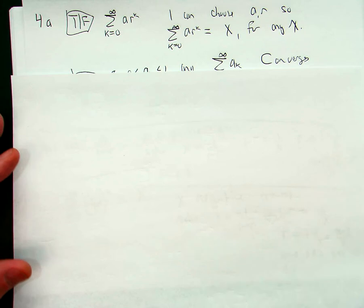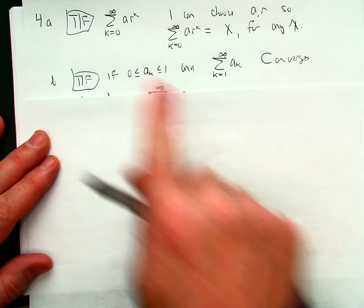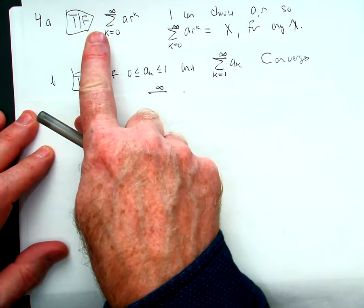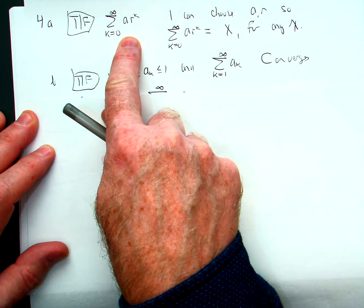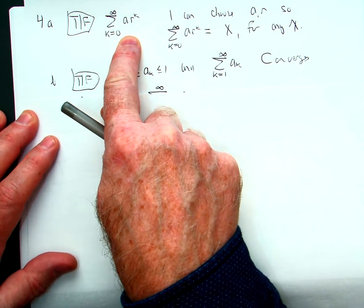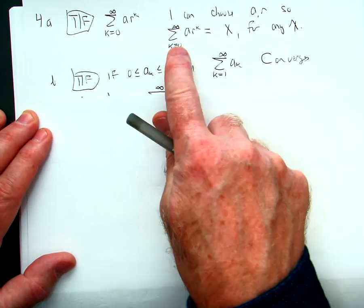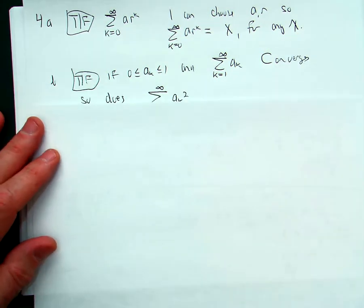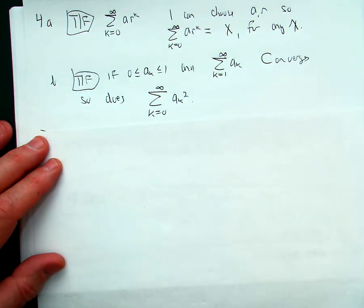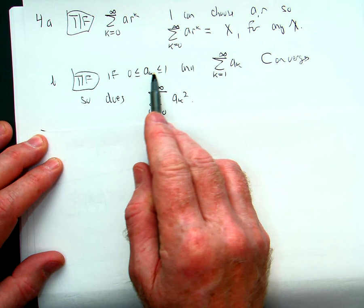So I'm going to solve for a and b. Here's four, and four a says given the geometric series, I can make this geometric series equal anything, any real number. In other words, I can choose a and r so that this is equal to x for any x.